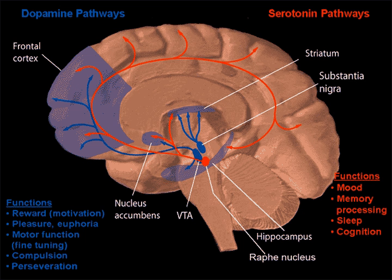Once the neurotransmitter is released into the synapse, it can either bind to receptors on the postsynaptic cell, the presynaptic cell can re-uptake it and save it for later transmission, or it can be broken down by enzymes in the synapse specific to that certain neurotransmitter. These three different actions are major areas where drug action can affect communication between neurons.